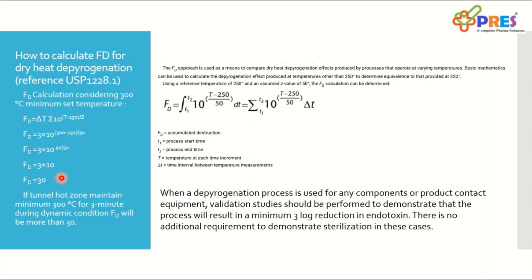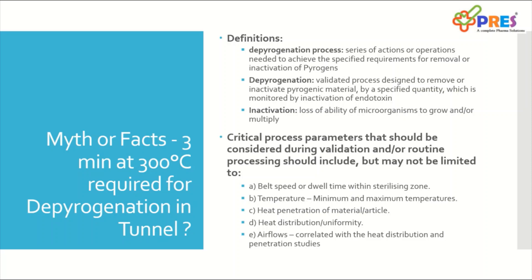Referring to USP Appendix 1: it is stated that when a depyrogenation process is used for any component or product-contact equipment, a validation study should be performed to demonstrate that the process will result in a minimum 3-log reduction of endotoxin. Please note: there is no additional requirement to demonstrate simulation of this criterion beyond that. The depyrogenation process is defined as a series of actions or operations needed to achieve specific requirements for removal or inactivation of pyrogens. Depyrogenation itself is a validated process designed to remove or inactivate pyrogenic material by a specified quantity, monitored by inactivation of endotoxin.